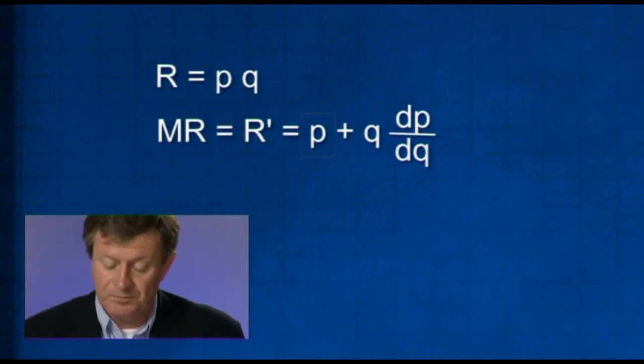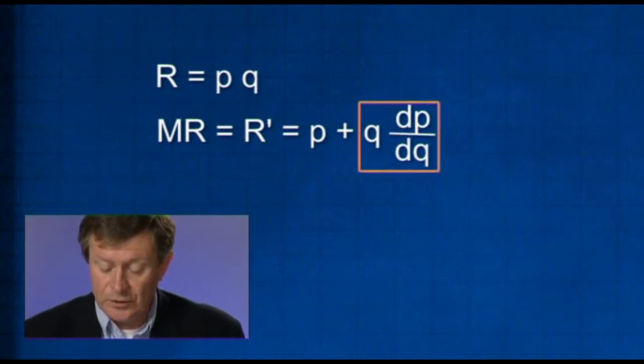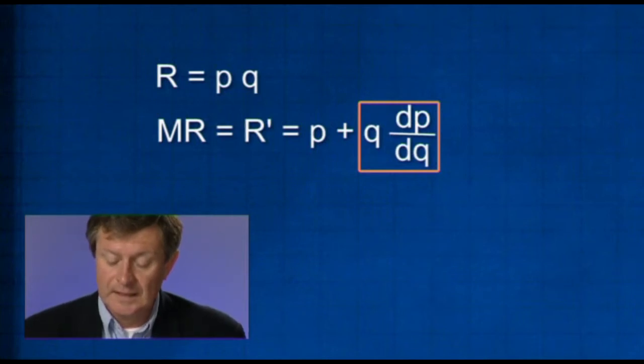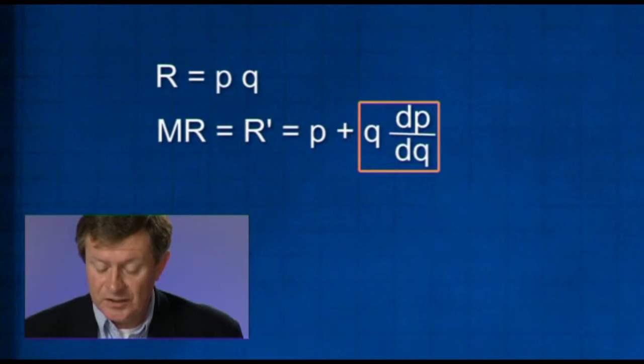Which will be the first term times the derivative of the second term, dQ, dQ is just 1, plus the second term, Q, times the derivative of the first term with respect to Q, which is dP/dQ. Now, this second term is very much like the elasticity expression. It's almost the same as the elasticity expression, or its reciprocal.